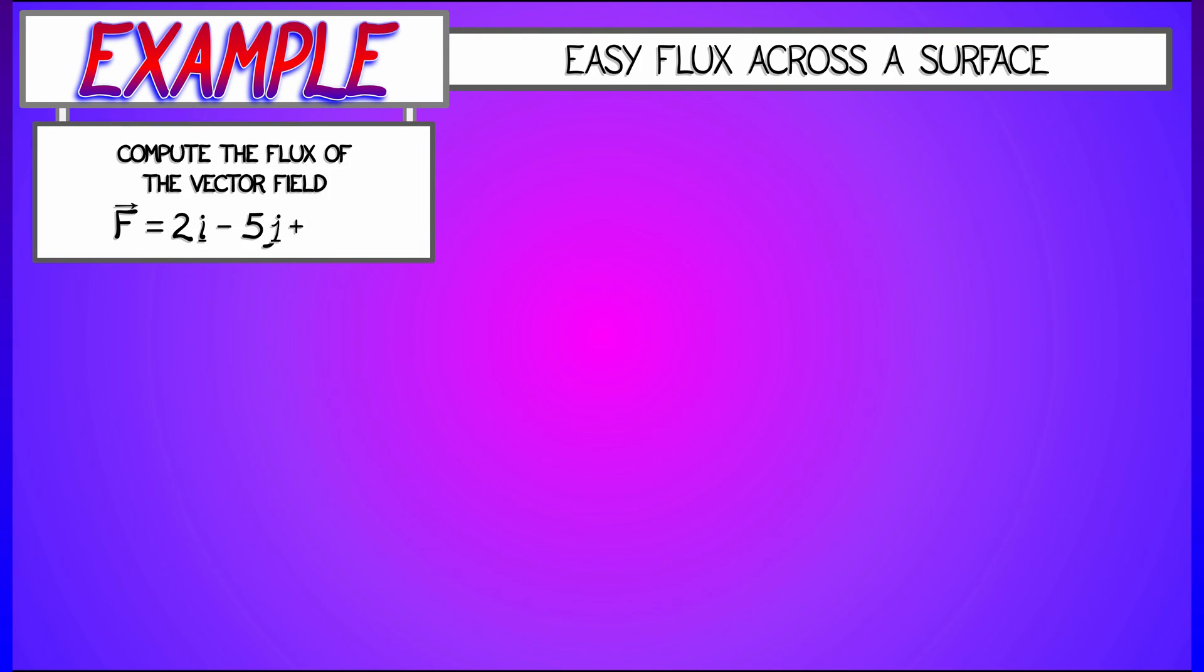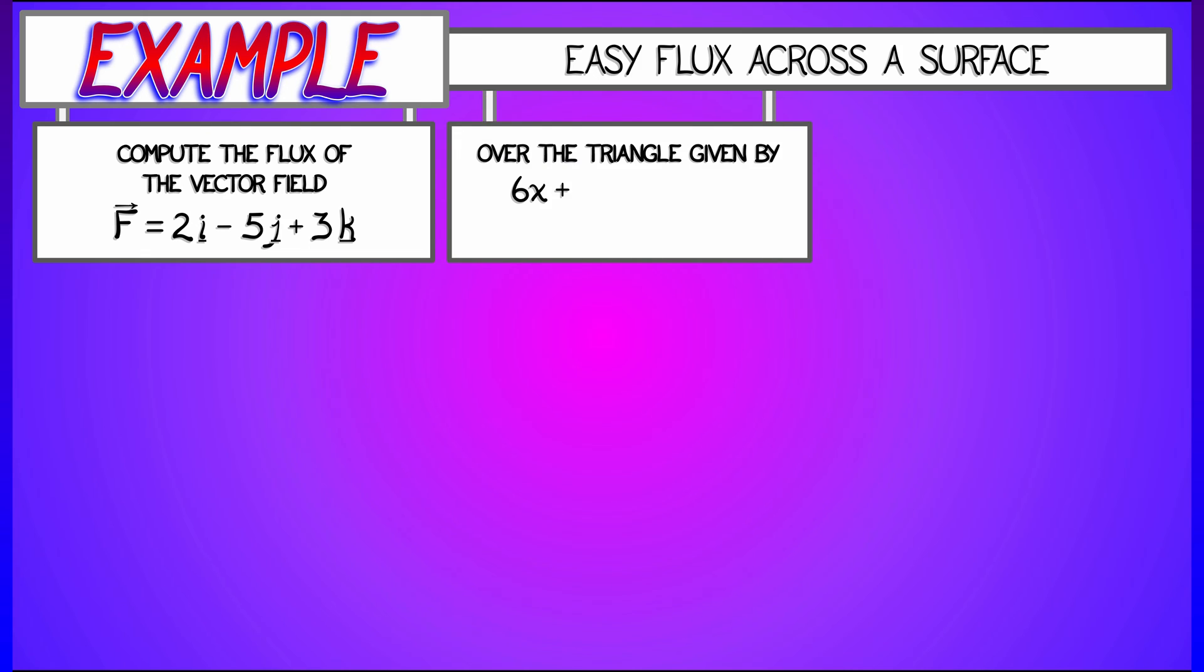Let's say we have the constant vector field f given by 2i minus 5j plus 3k. And I need to compute the flux of this over the triangle that is defined by the equation 6x plus 3y plus 2z equals 6.